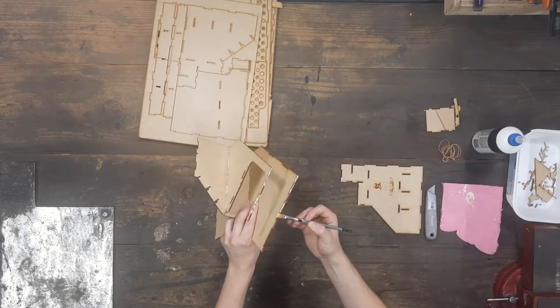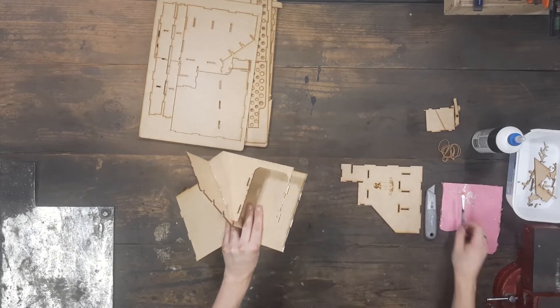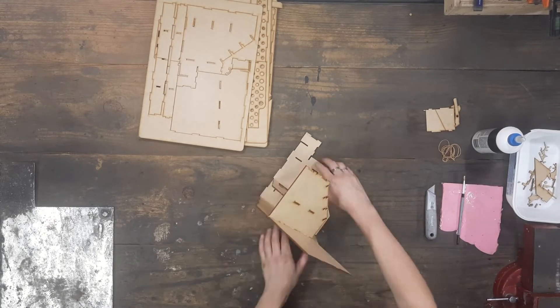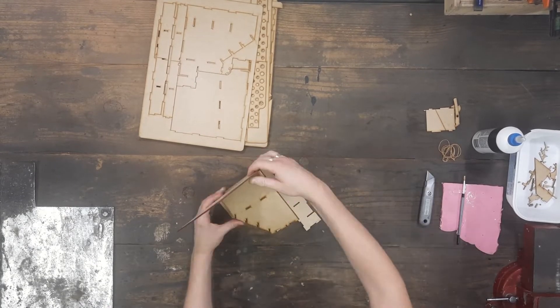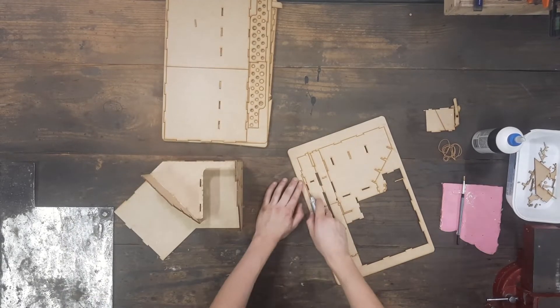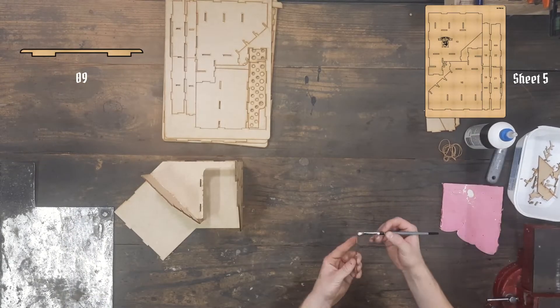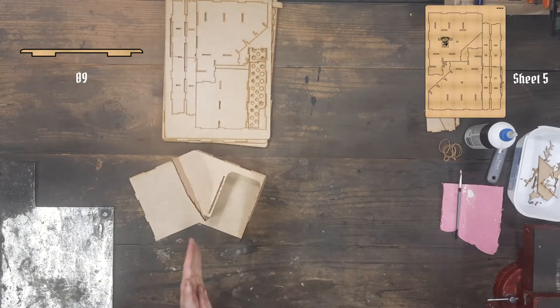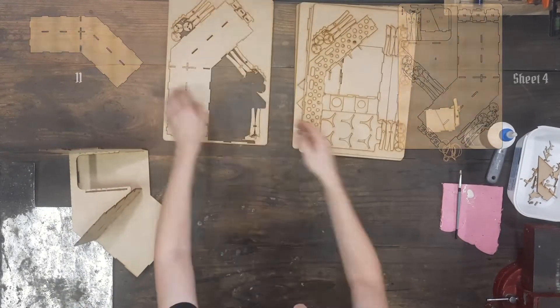Take note, it might be easier to glue part 9 to part 8 before gluing the rest together. It doesn't really make much of a difference as I did it the other way around, but if the parts fit a little bit tightly you might want to do it that way around.